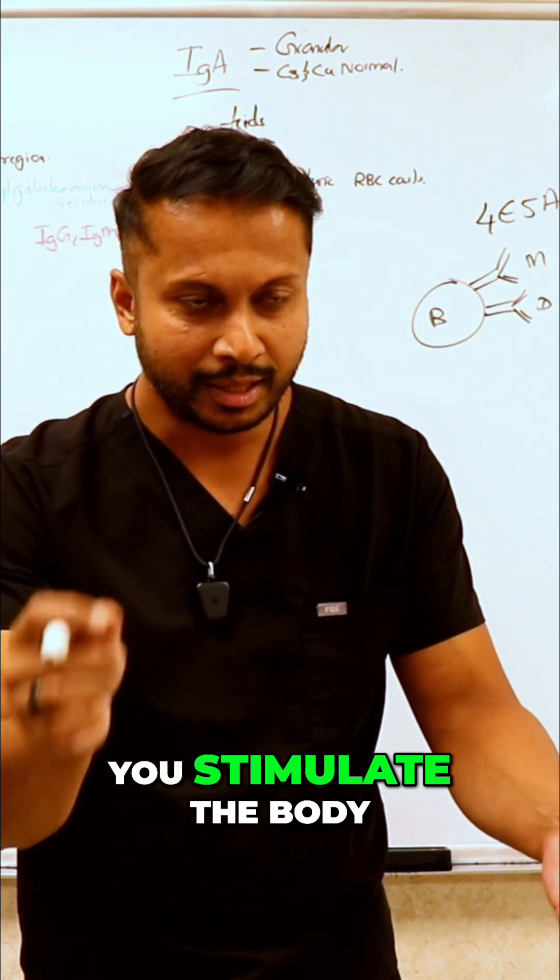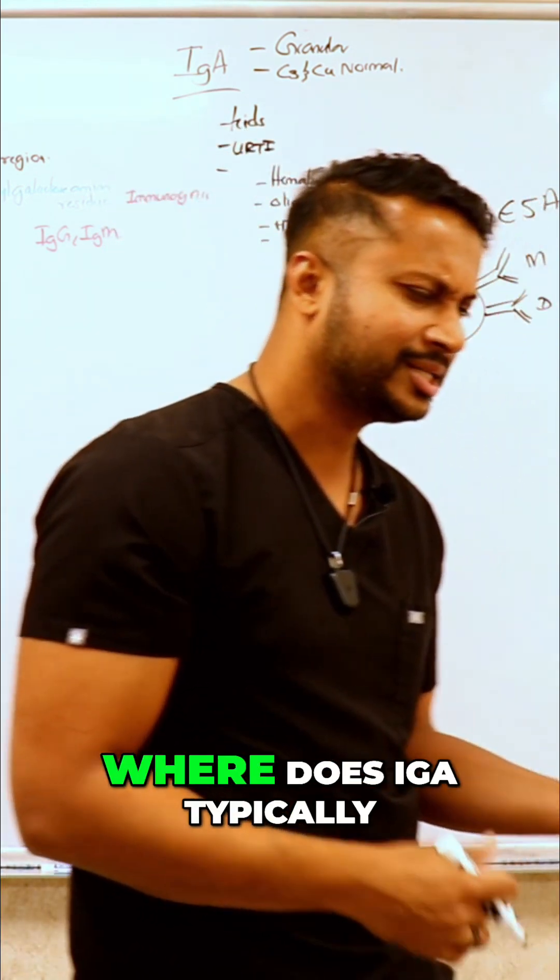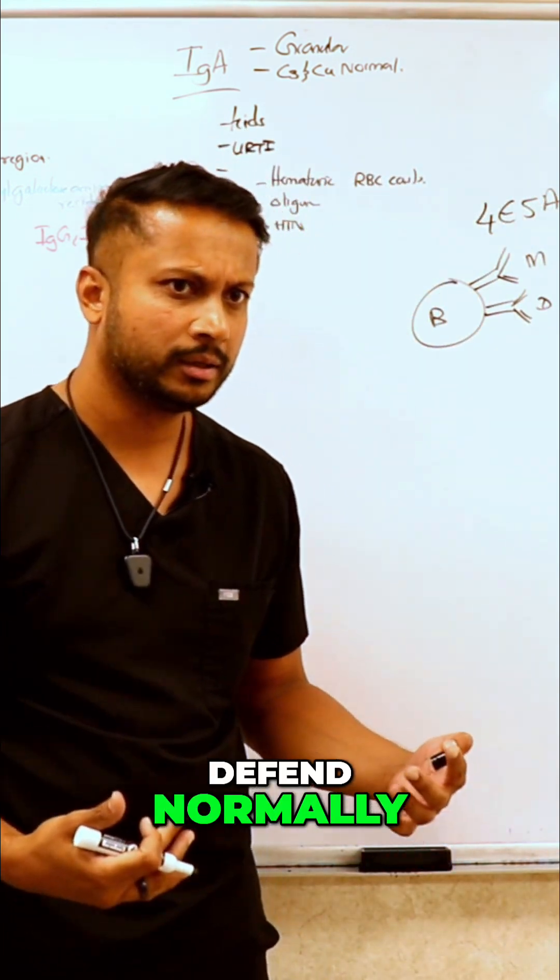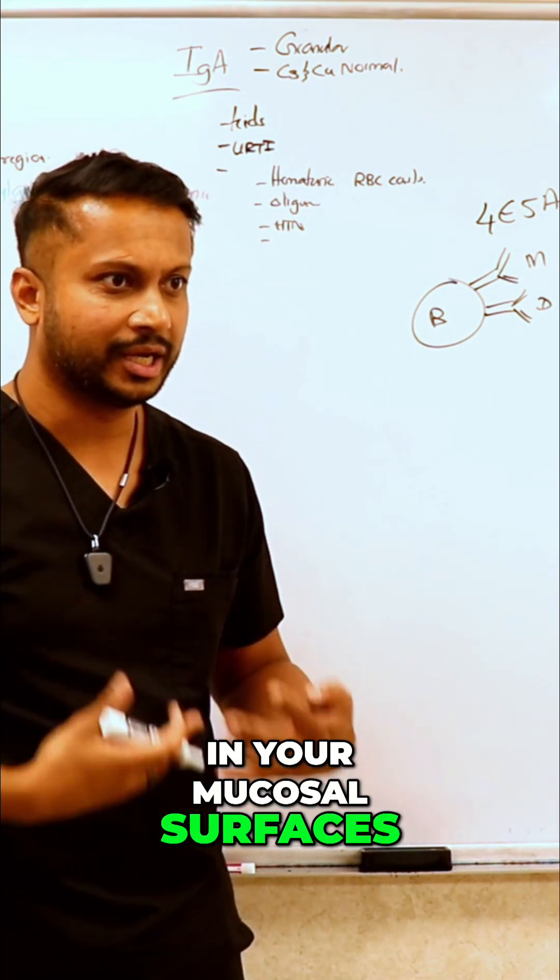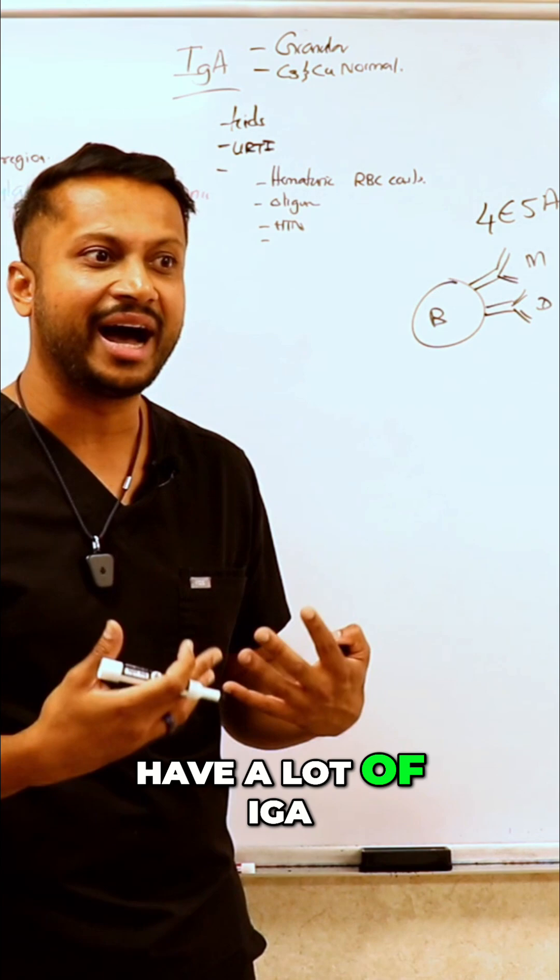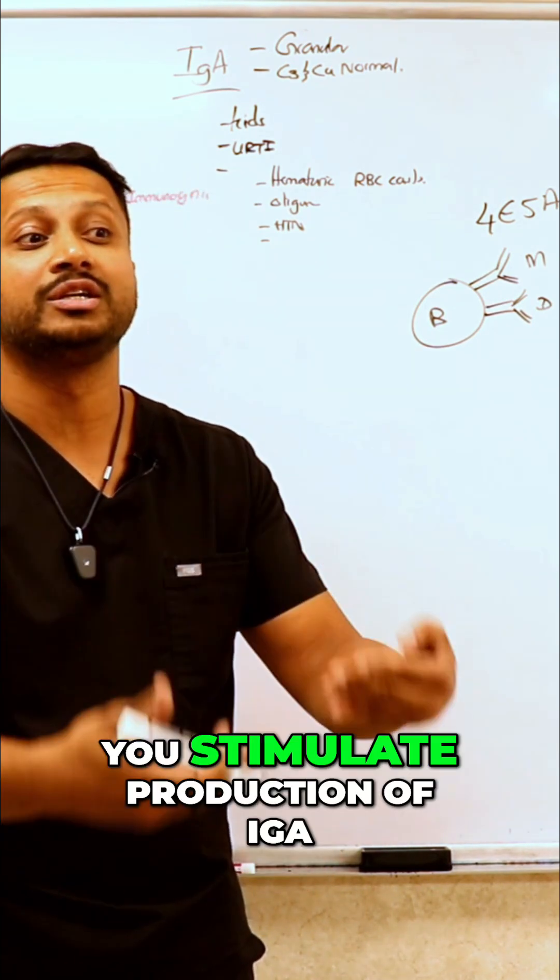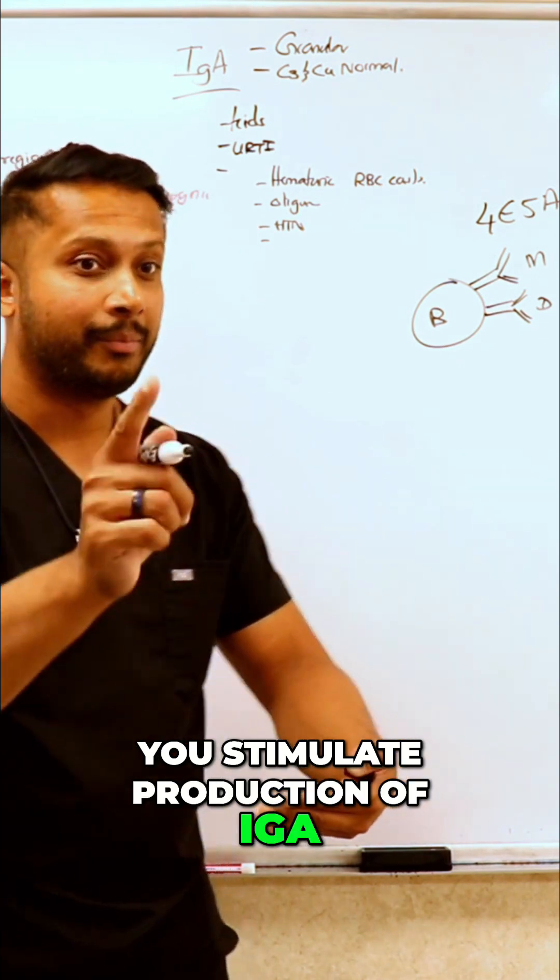So what would stimulate production of IgA? Where is IgA typically found normally? In your mucosal surfaces, in your lungs, in your sinuses. That is where you have a lot of IgA, that's your main defense there. So you get an upper respiratory tract infection, now you stimulate production of IgA.